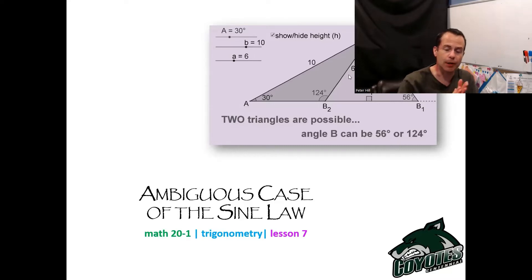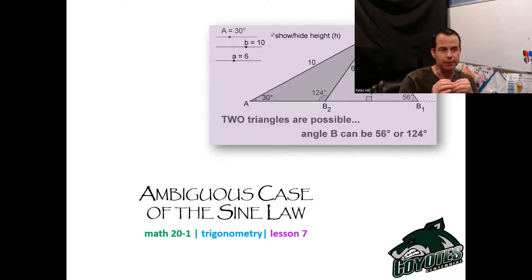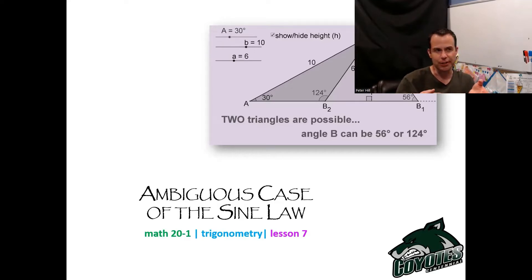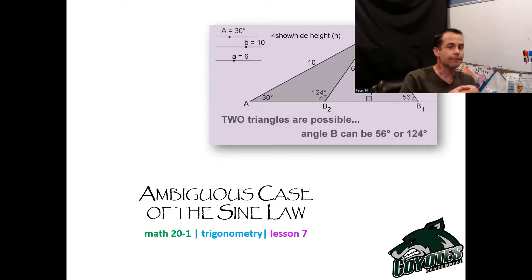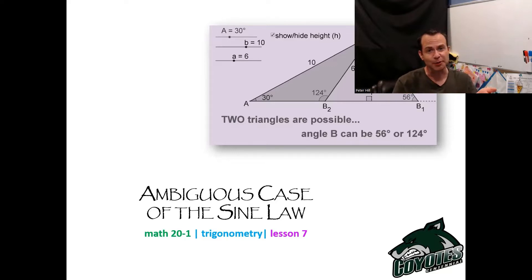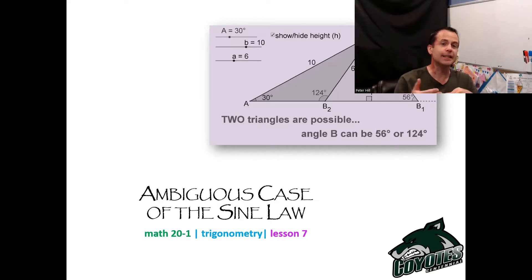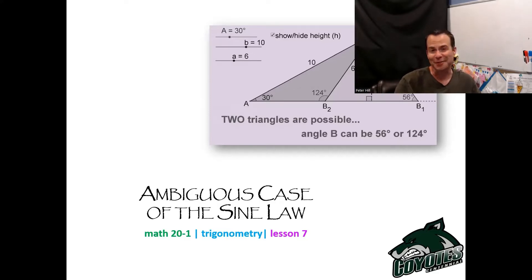Today we're going to talk about the ambiguous case of the sine law. Before I get into this, what does the word ambiguous mean? Ambiguous in the English language essentially means there's not enough information to say whether you're talking about this or whether you're talking about that. For example, if I said 'you look sick,' do I mean you look sick like you're about to throw up, or you look sick like you look amazing? I didn't give you enough context. That's what ambiguous means — not enough information to know exactly what we're talking about.